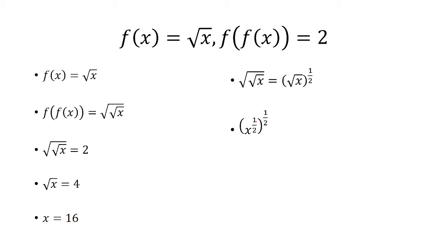Whenever you have an exponent to an exponent, you multiply. So we have x to the 1 fourth power, and we're going to set that equal to 2.